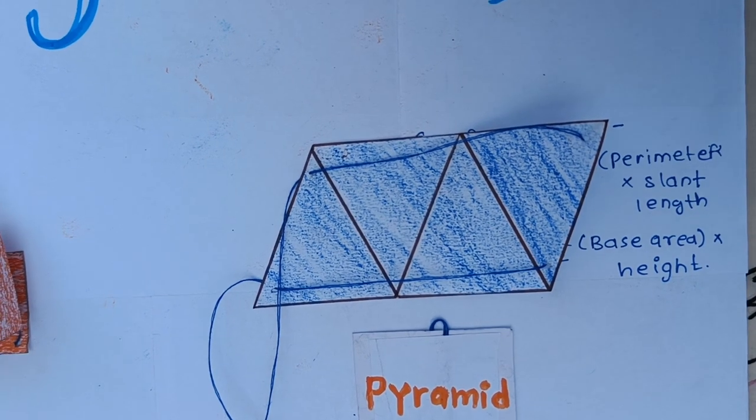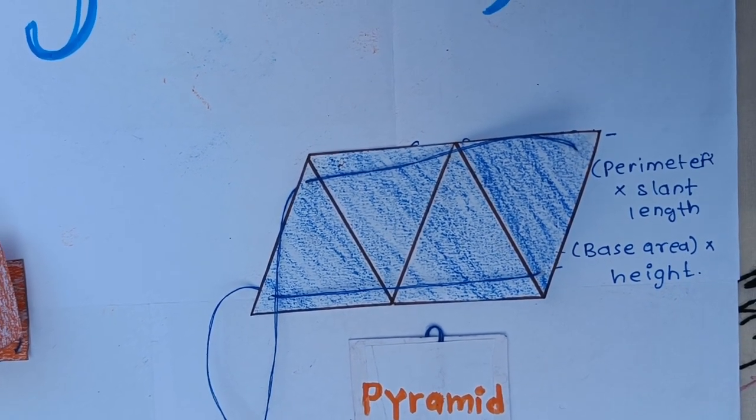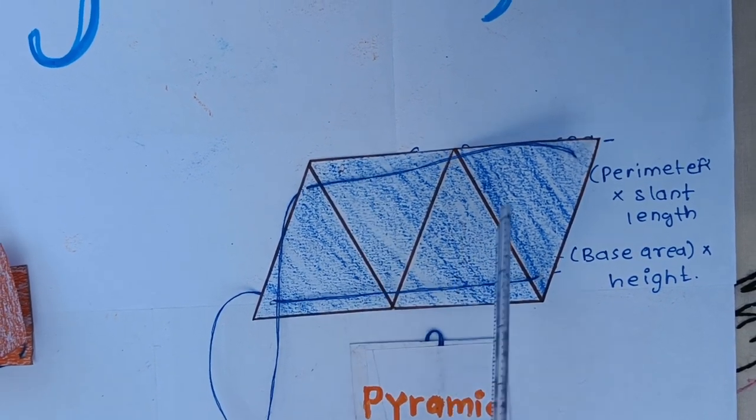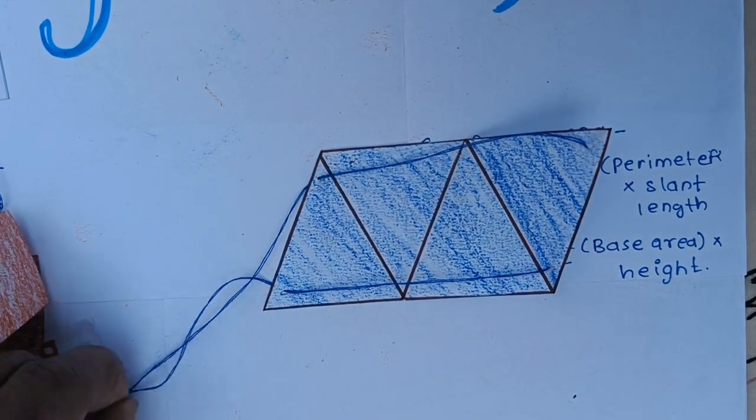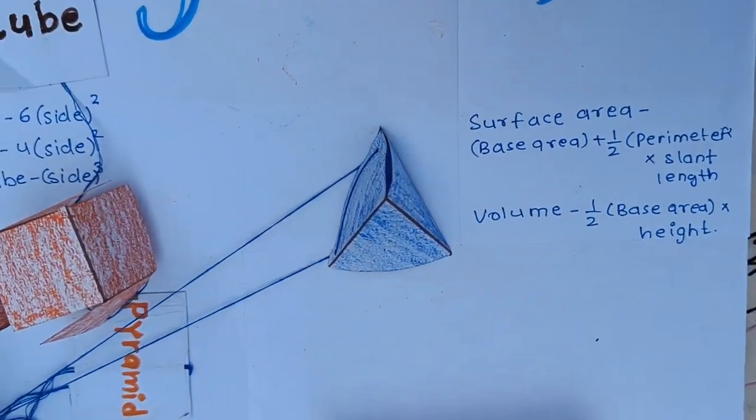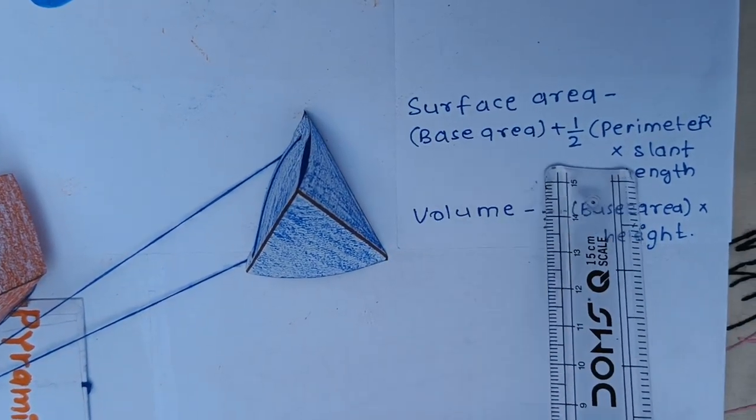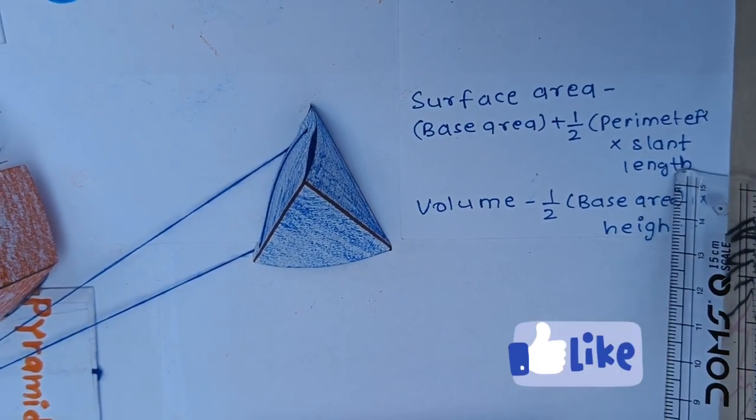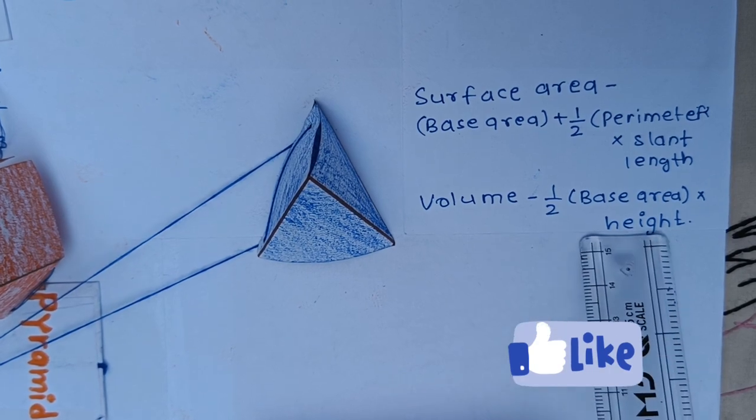Second, I want to say that here is a pyramid which has 4 faces: 1, 2, 3, 4. And when we fold it, it becomes in a form of triangular pyramid. Its surface area is base area plus half into perimeter into slant length, and volume is half into base area into height.